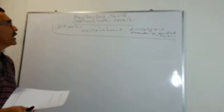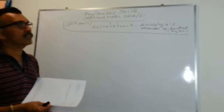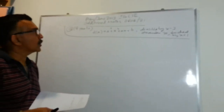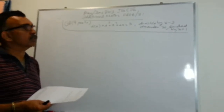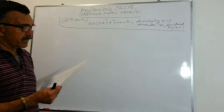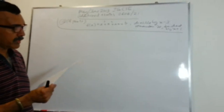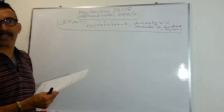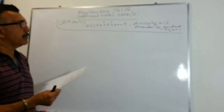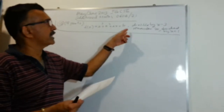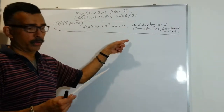This is question 12 from the May-June 2013 IGCSE Additional Maths paper, code 0606/21. The function f(x) = x³ + x² + ax + b. I have written the information here so that we can quickly follow.